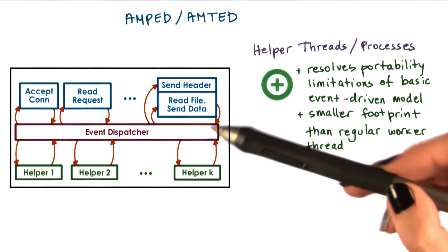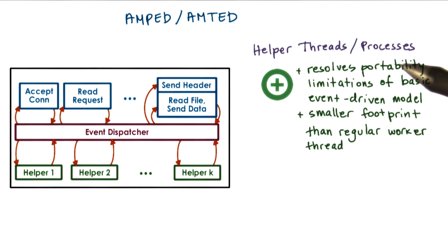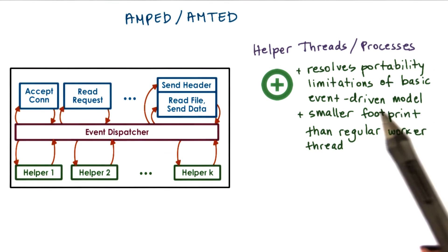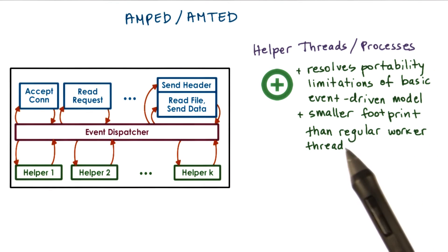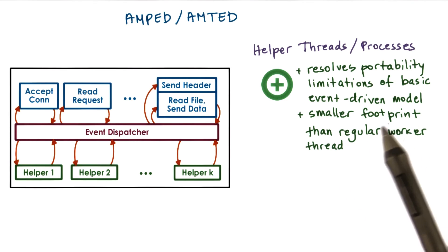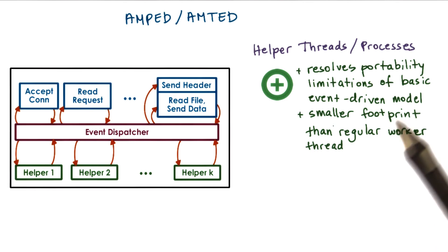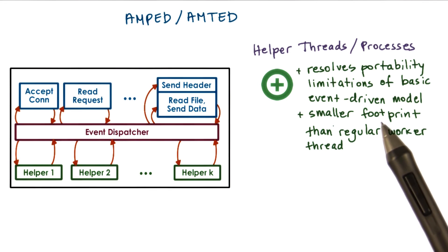The key benefits of the asymmetric model that we described is that it resolves some of the limitations of the pure event-driven model in terms of what is required from the operating system: the dependence on asynchronous IO calls and threading support. In addition, this model lets us achieve concurrency with a smaller memory footprint than either the multiprocess or the multithreading model.